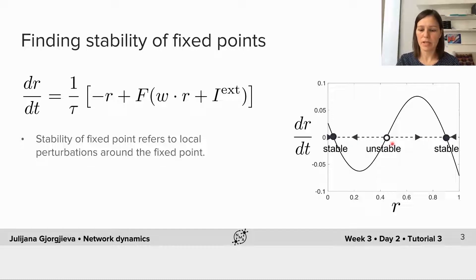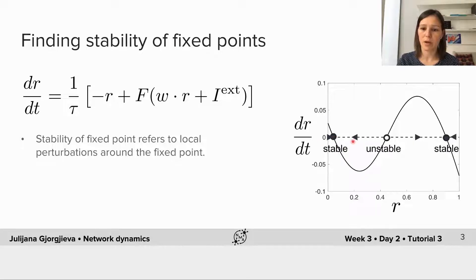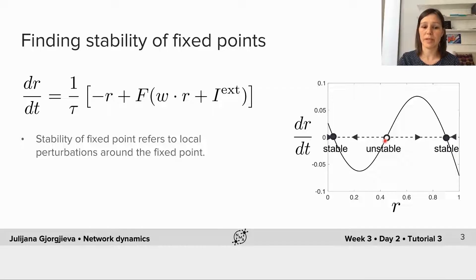Now we're interested in determining the stability of these fixed points. We have denoted the arrows and we can define the stable and unstable fixed points: a stable fixed point is one where the arrows — the flow — points towards the fixed point. This is the case for the lower and the highest fixed point. If the arrows point away from the fixed point, that fixed point is unstable, indicated here with the empty circle.